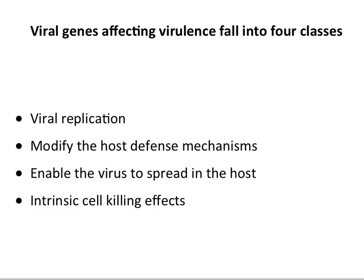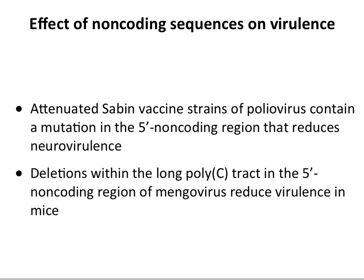From years of these experiments across many viruses, we identify four classes of genes that regulate viral virulence: first, genes that modulate viral replication — not very interesting because they don't identify anything unique to the animal; second, genes that modify host defense mechanisms, antagonizing immune defenses; third, genes that allow spread of the virus in the host; and fourth, rare viral genes with intrinsic cell-killing effects that cause cell death specifically in the animal.